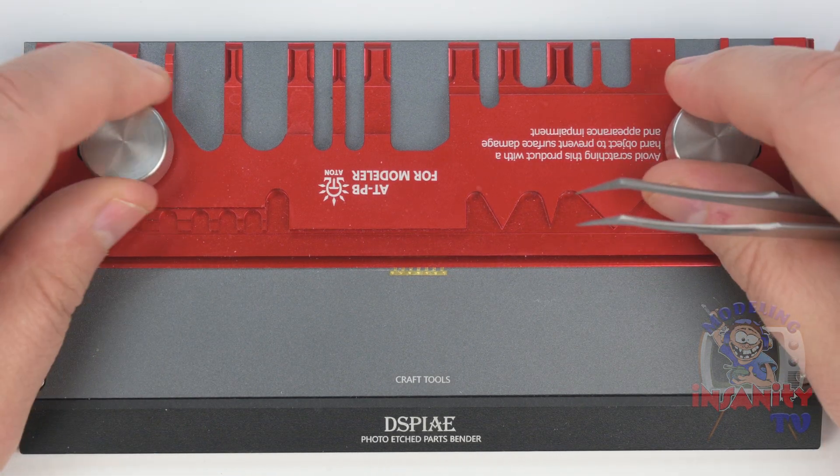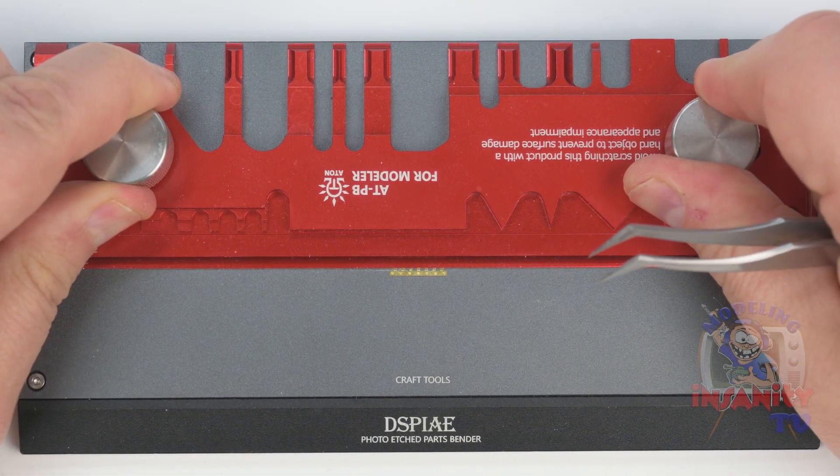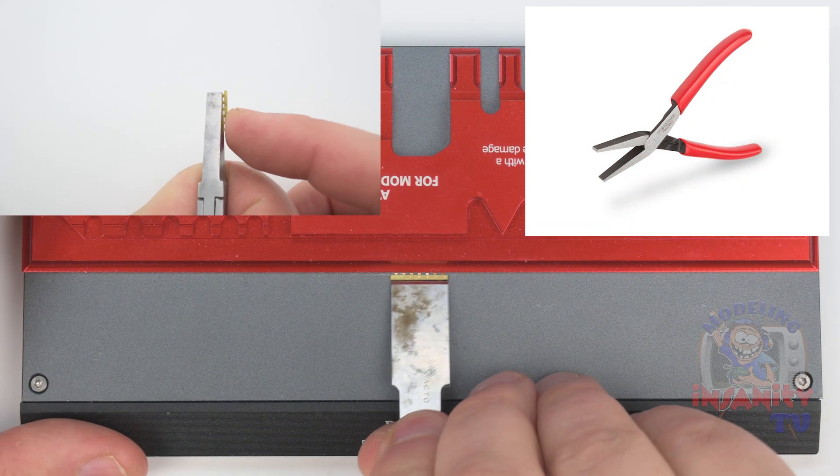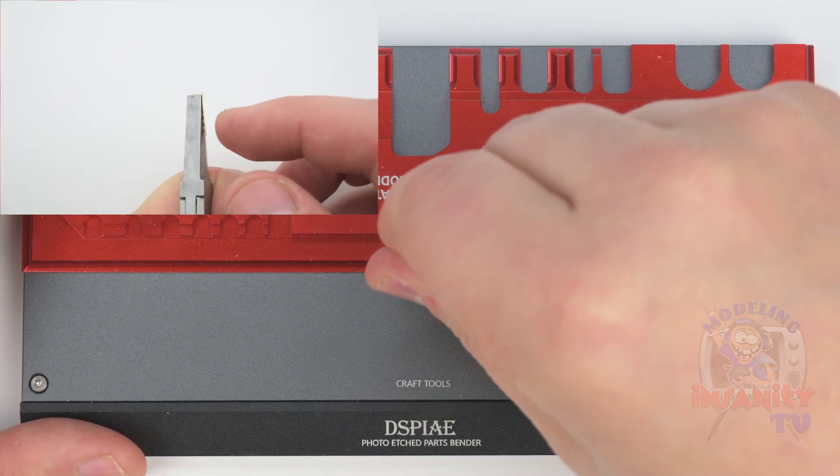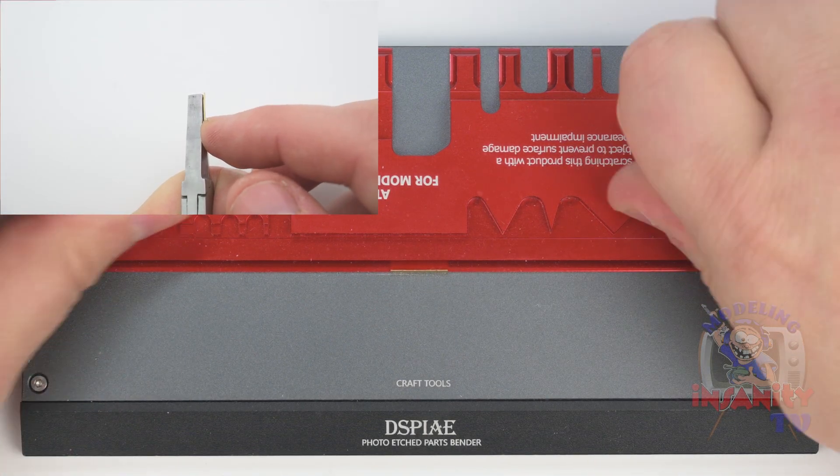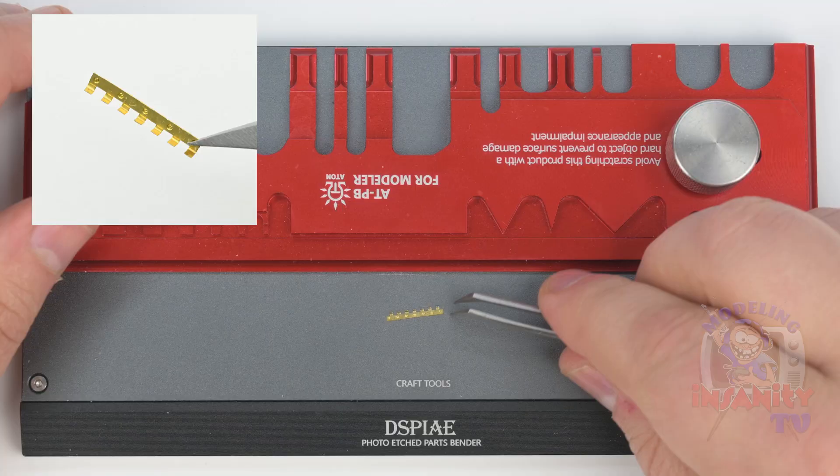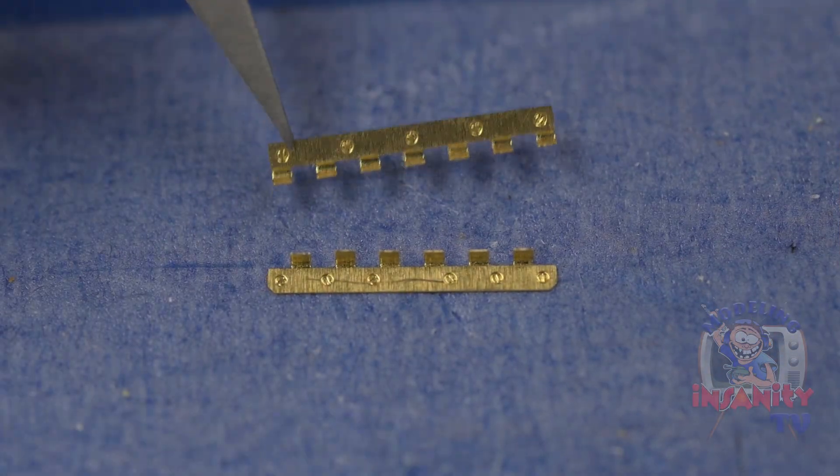Here I'm making the shape in both the photo etch bender from Display and a flat nose plier. You can use either. Using a chisel blade or a straight razor in the photo etch bender, or your finger on the flat nose plier, will do the trick.